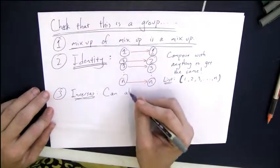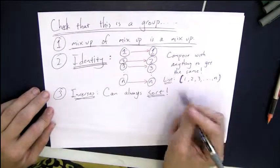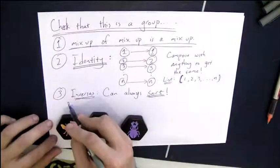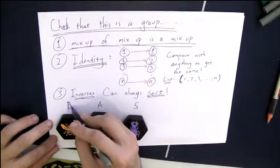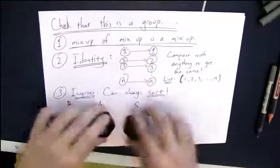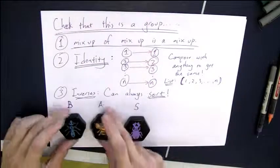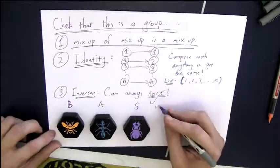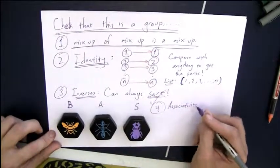How about inverses? Everything needs to have an inverse. But that's easy. If I have some things that are mixed up, I can always sort them and get the list of things just in their original order, which is the identity element. So we can always sort. That means we always have inverses.